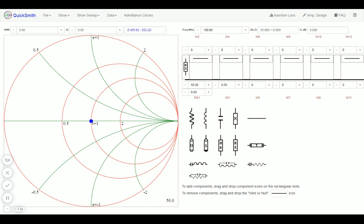So let's jump right into QuickSmith and get started by looking at an example. Let's say our goal is to match a 500 ohm load to 50 ohms. We start by updating the load value by right-clicking to 500 ohms.